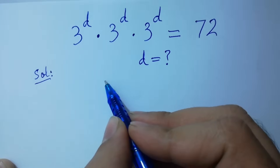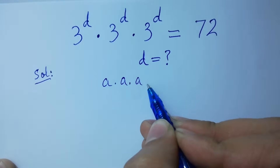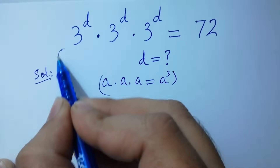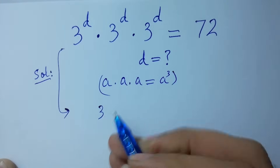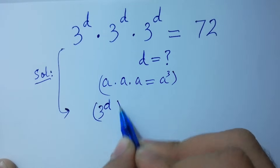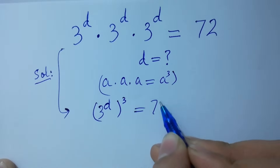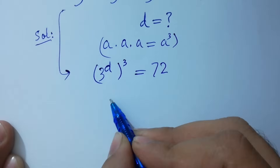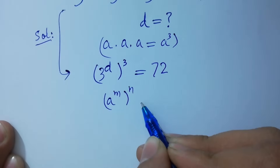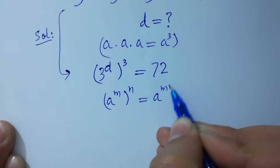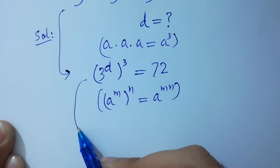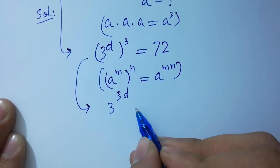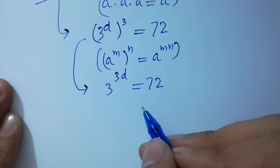Since a times a times a equals a cubed, we have 3 to the power d, to the whole power cube, equal to 72. I hope you understood. Since a to the power m, to the whole power n, equals a to the power m·n,